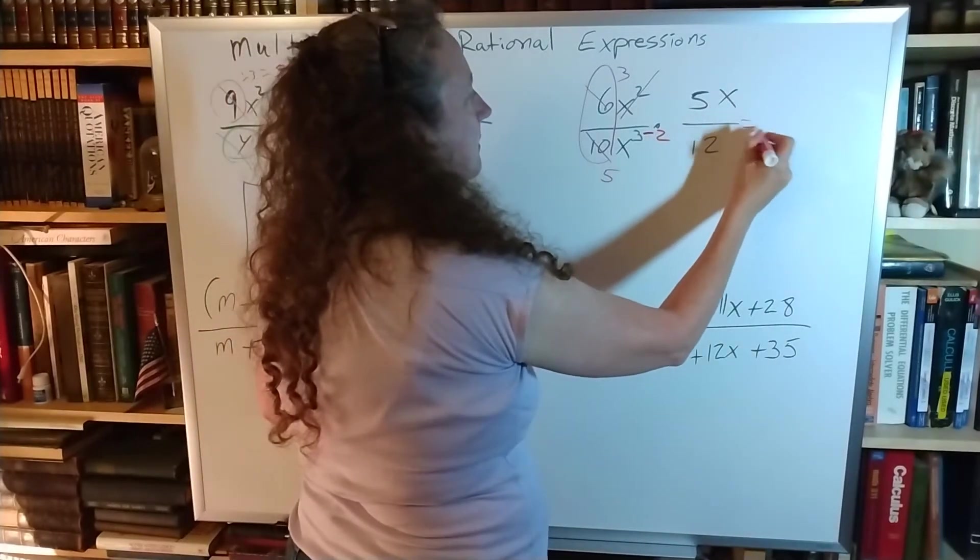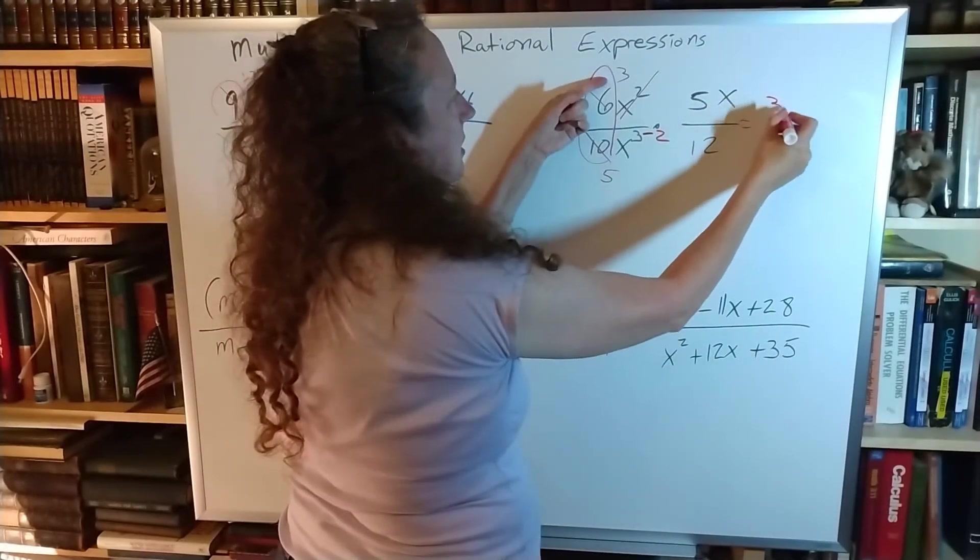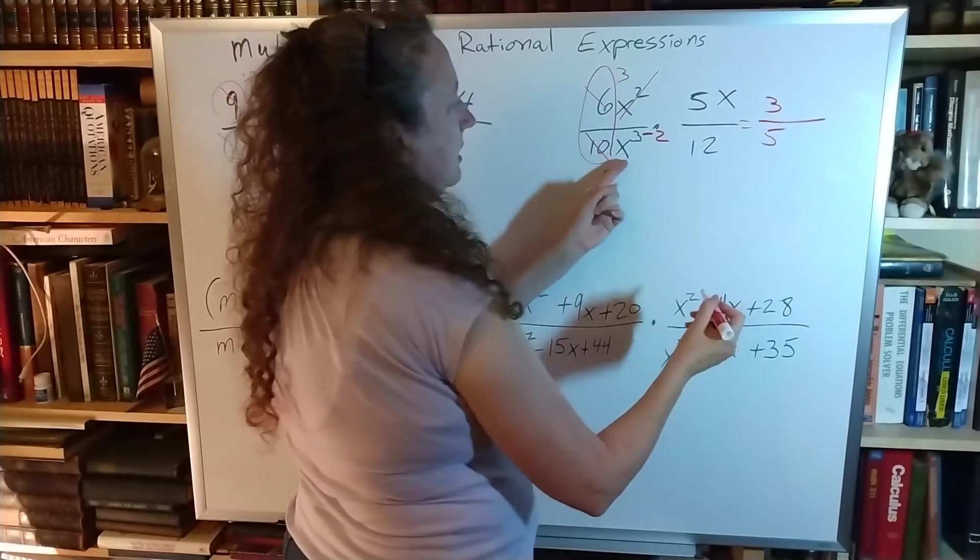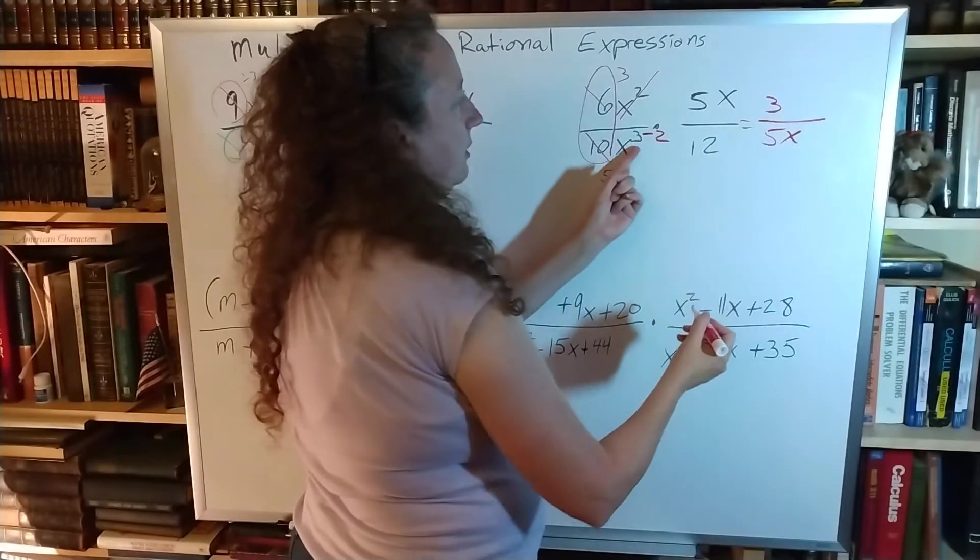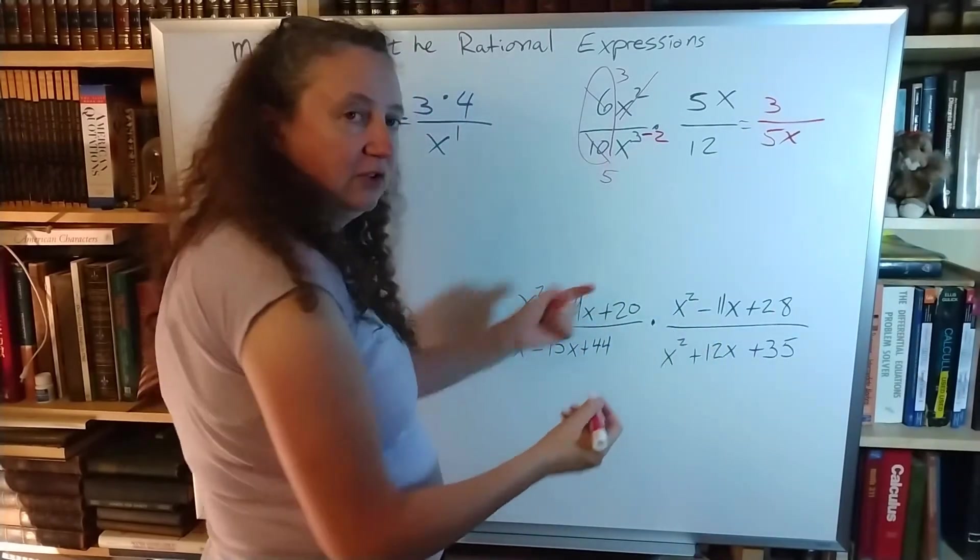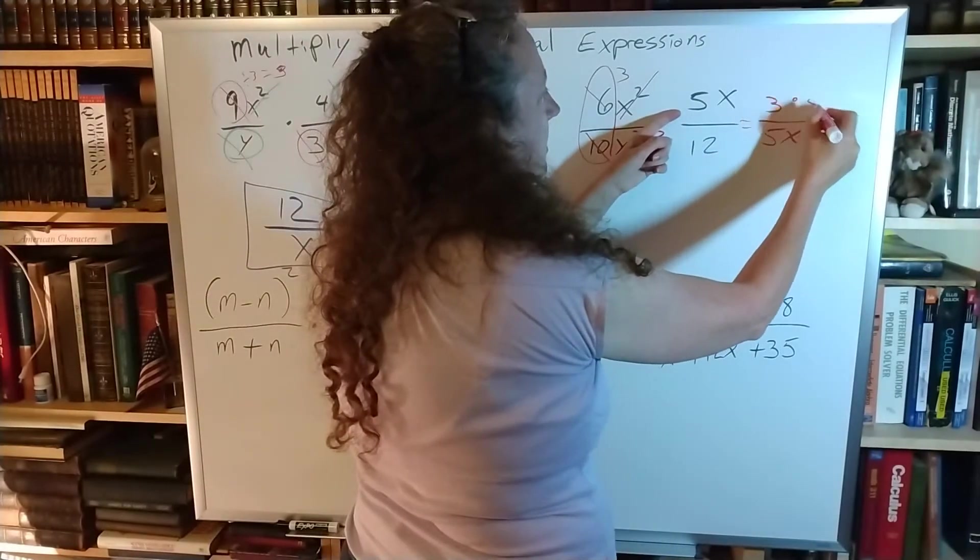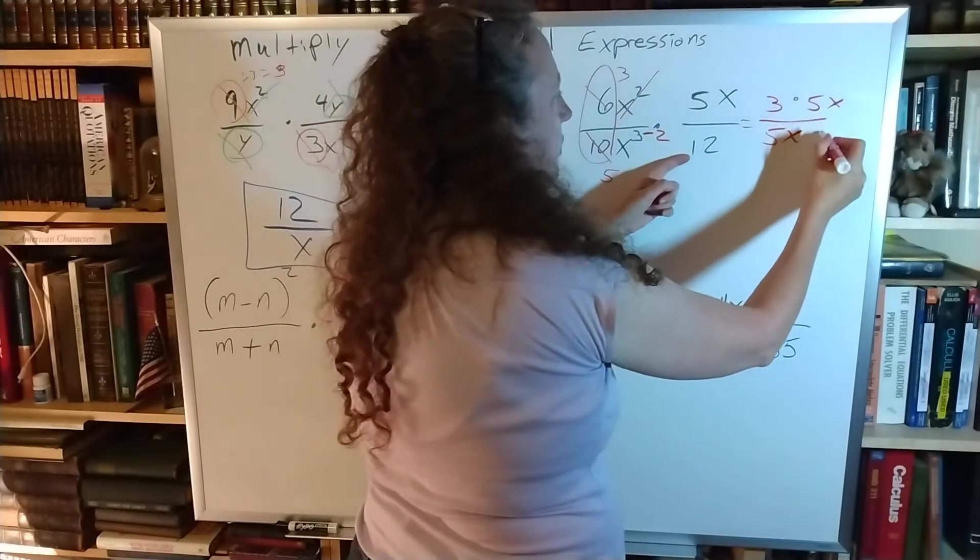So I have 3, the x is gone, over 5, x to the 3 minus 2, so that's x to the 1, being multiplied by 5x over 12.